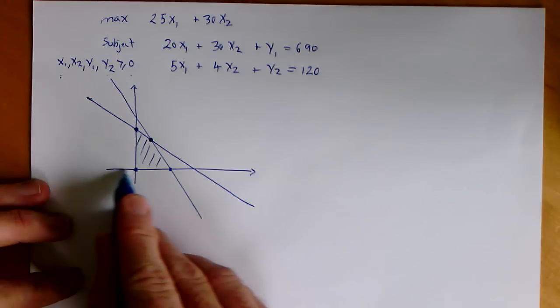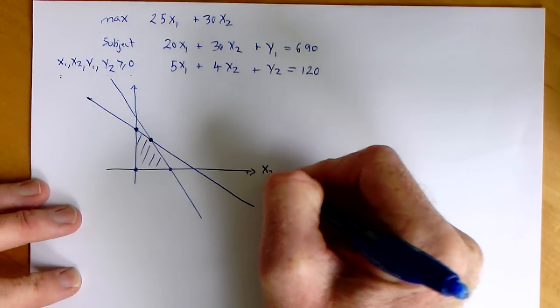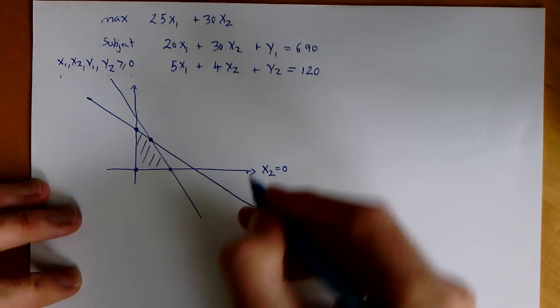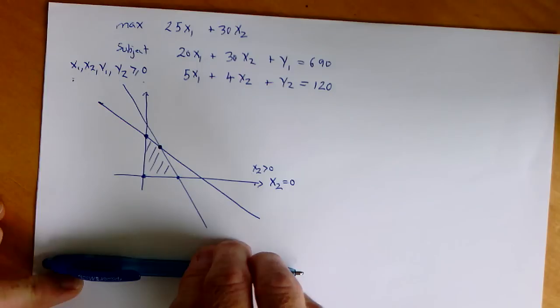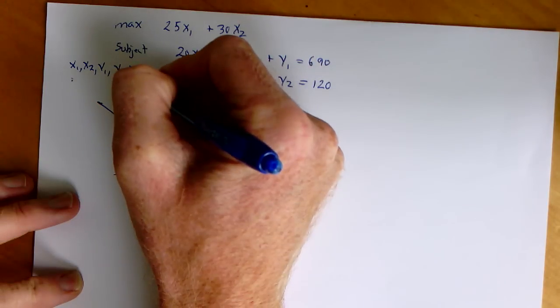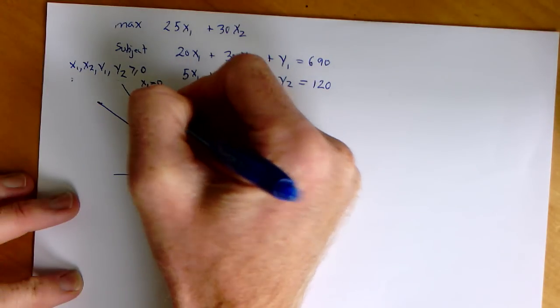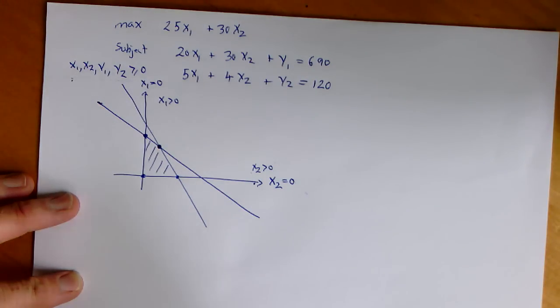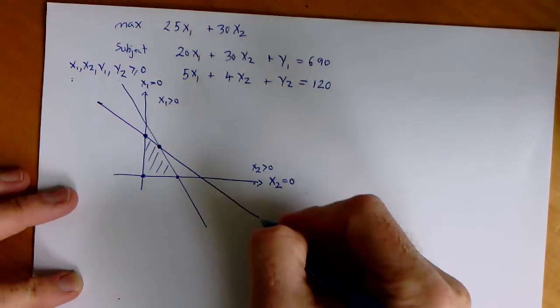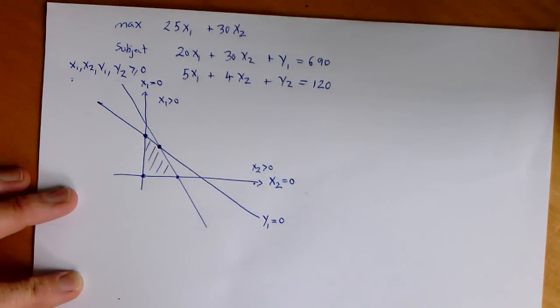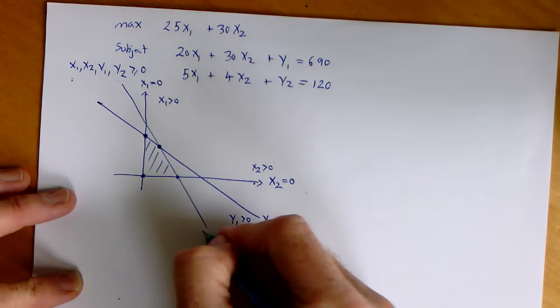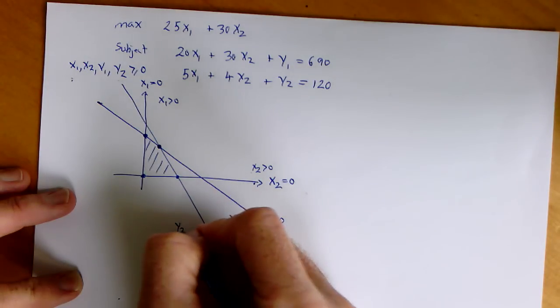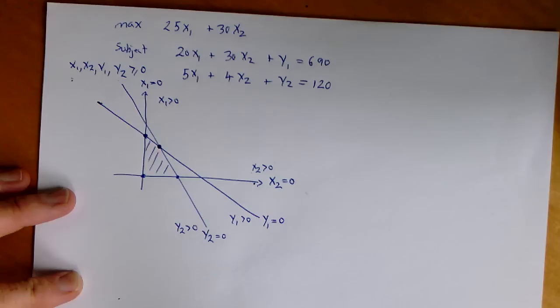We have this, for example, which we might often label x1, but in fact, this corresponds to x2 equal to 0. So we know we're looking for solutions in this region because x2 is positive. This, which we often call the x2 axis, that's really just x1 equal to 0. This is the y1 equal to 0 line. y1 is positive if you're below that line. And this is y2 equal to 0. y2 is positive if you're below that line. That gives us the feasible region.